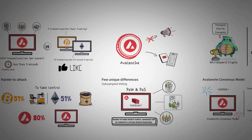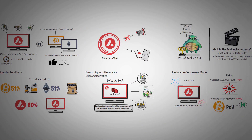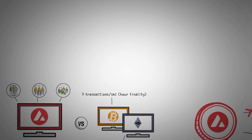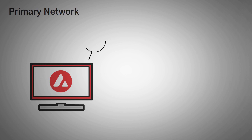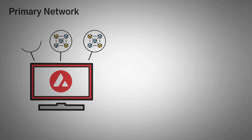Now that I've basically explained how the Avalanche consensus model works, let's get into the real thing where Avalanche shines — its network infrastructure. Avalanche has one primary network, and that network actually has three built-in blockchains with it. Avalanche isn't just one blockchain; it is at least three, but we'll get to that in a second.